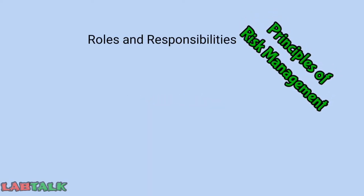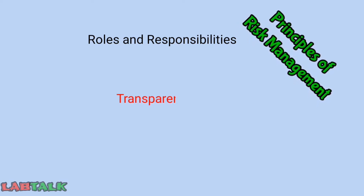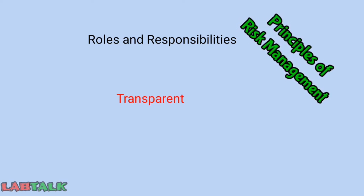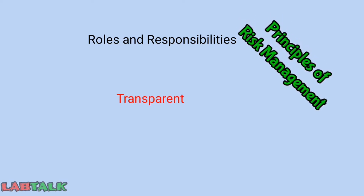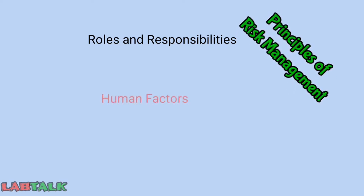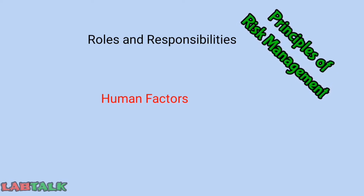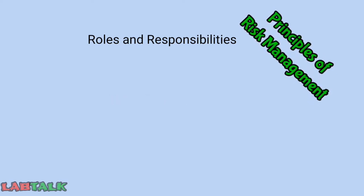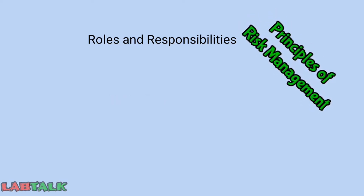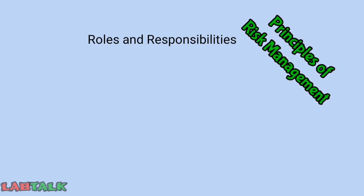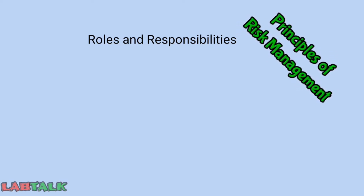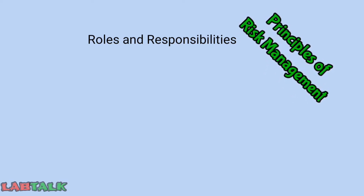The next principle is roles and responsibilities. Risk management must be transparent and inclusive. It should take into account human factors and ensure the importance of each person's role at each stage of the risk management process, along with the responsibilities of every person in the organization.